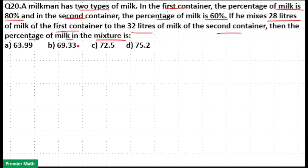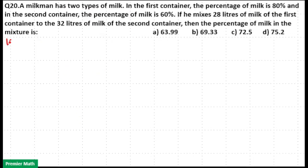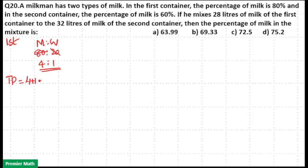We need to find the percentage of milk in the mixture. In the first container, milk is 80%, which means water is 20%. So the milk to water ratio is 4:1. The total parts in the first container is 4 plus 1, which equals 5 parts, and milk is 4 parts.